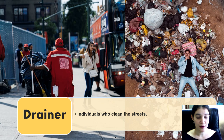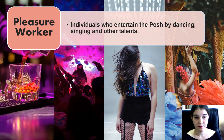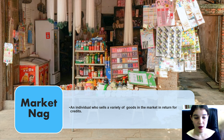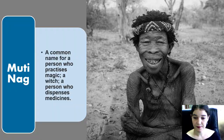A drainer is an individual who cleans the streets. A pleasure worker is an individual who entertains the posh by dancing, singing and using their other talents. The pleasure workers are stationed in pleasure clubs. Locusts are the policemen — they wear yellow and green uniform and a helmet that resembles the insect locust. Market nags are individuals who sell a variety of goods in the market in return for credits — basically street vendors. Mooty nags is a common name for a person who practices magic, a witch or a person who dispenses medicine — in today's day, we would consider it to be a sangoma.